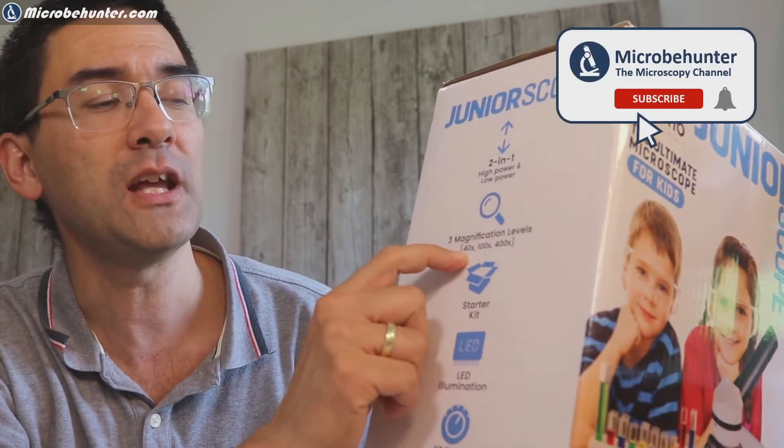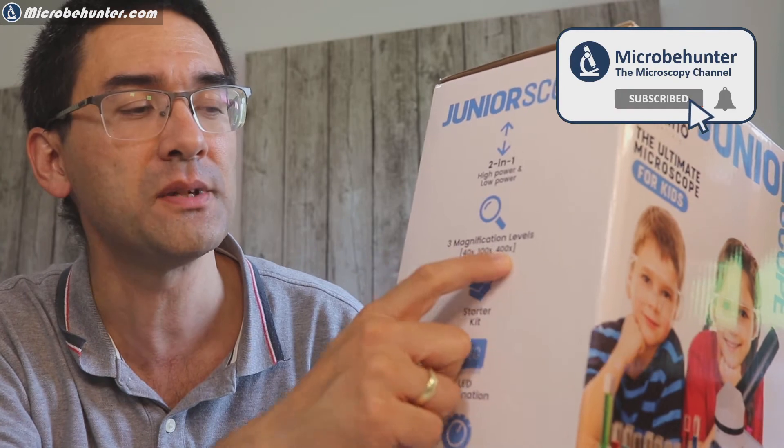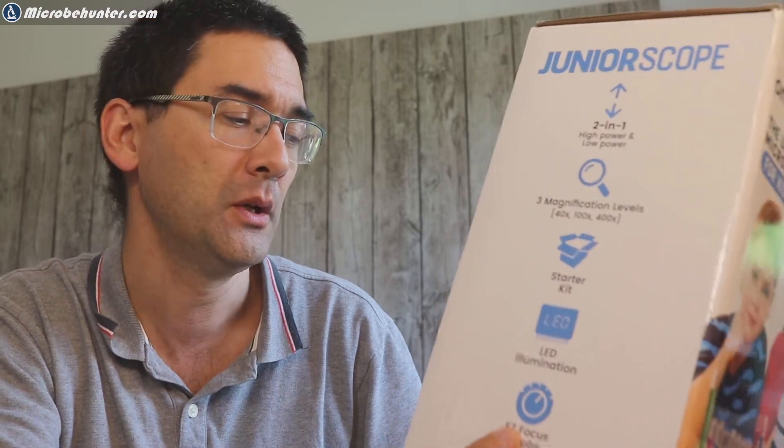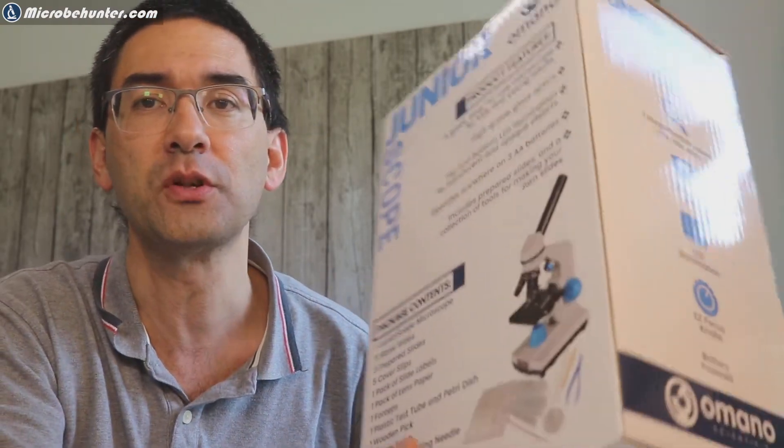It comes in a box like this and simply to show you what is included here. Total magnification of 40 to 400 times. It is an LED illumination and so it's battery operated and it has one focusing knob. And there are a whole bunch of other accessories also included.